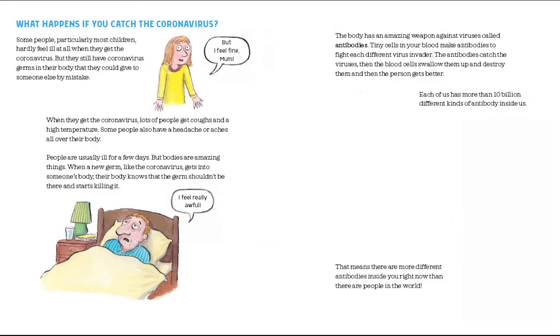People are usually ill for a few days but bodies are amazing things. When a new germ like the coronavirus gets into somebody's body their body knows that the germ shouldn't be there and starts killing it. The body has an amazing weapon against viruses called antibodies. Tiny cells in your blood make antibodies to fight each different virus invader. The antibodies catch the viruses then the blood cells swallow them up and destroy them and then the person gets better.